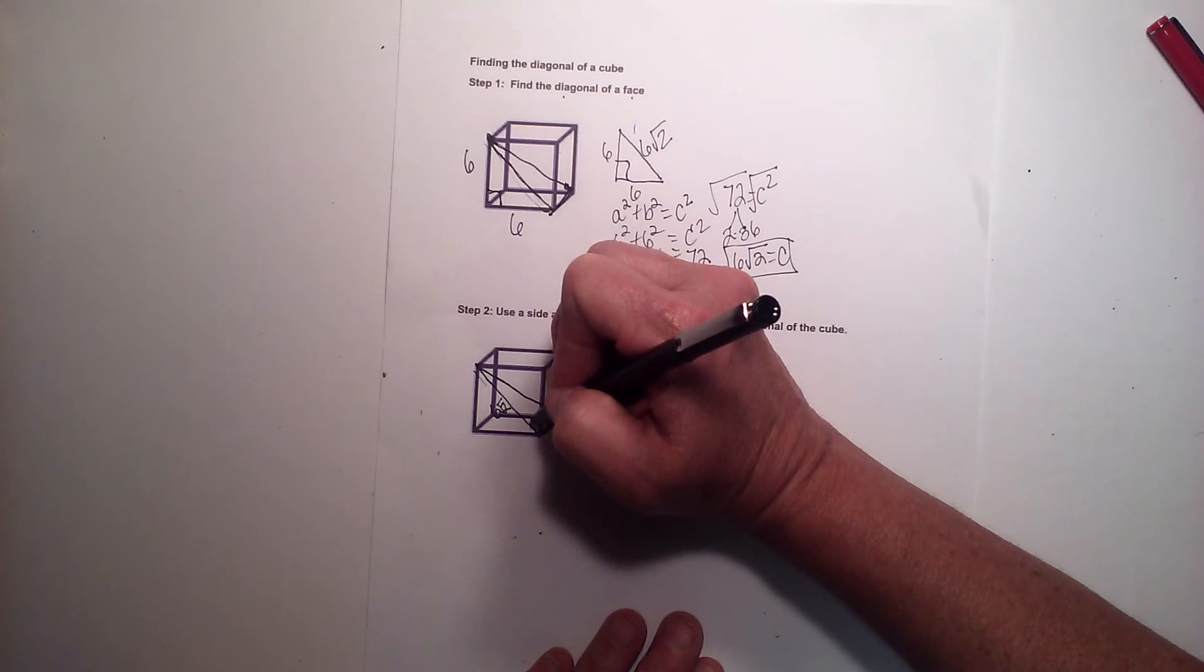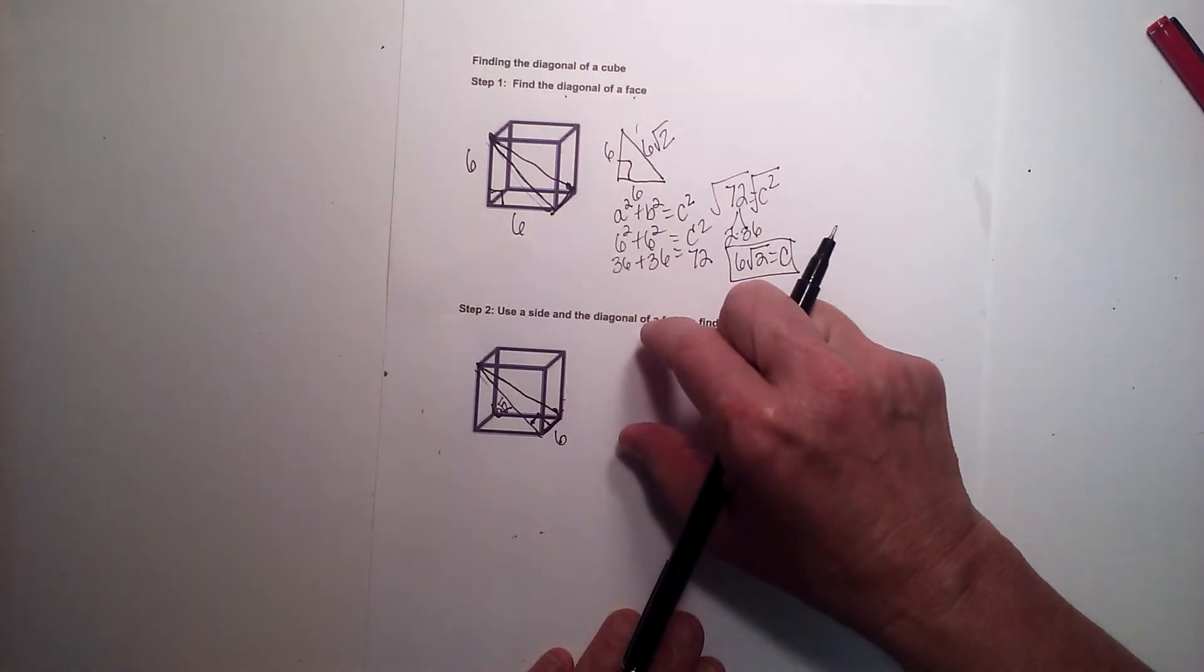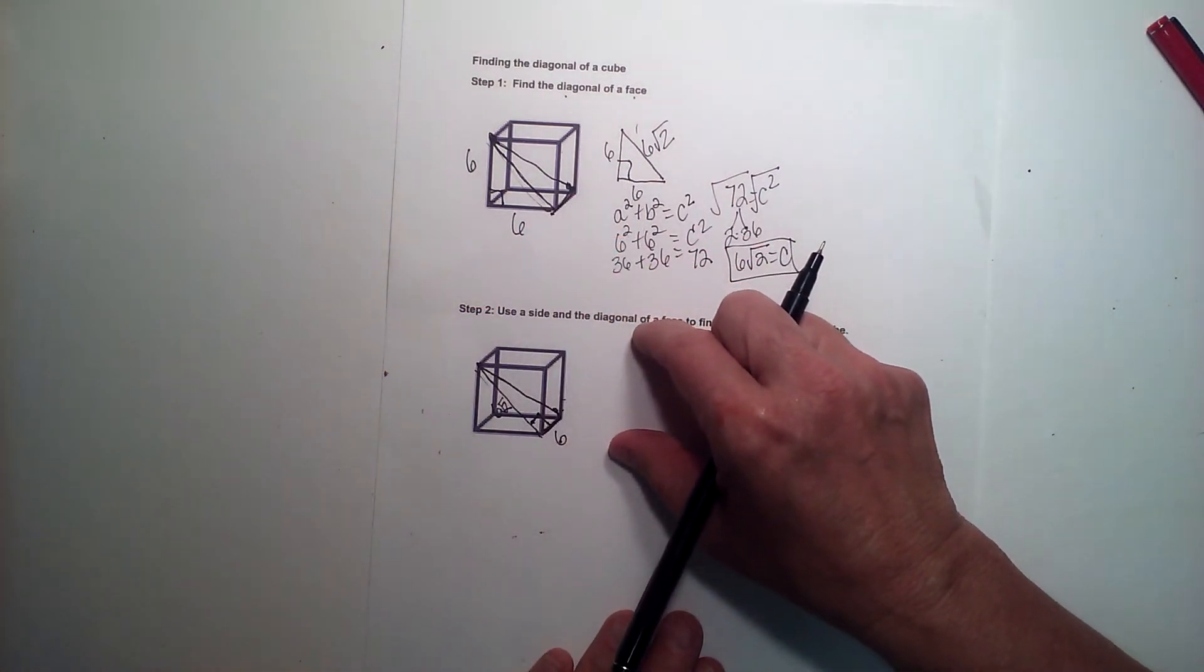So we have a right angle down here. Now I'm going to take this triangle and I'm going to draw it up here so you can see it outside of the cube.